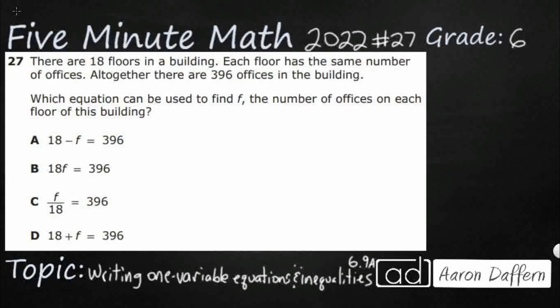So we have a building here, and that's got 18 floors. Each floor has the same number of offices, and altogether there are 396 offices. We need to find an equation that helps us find f, the number of offices on each floor.